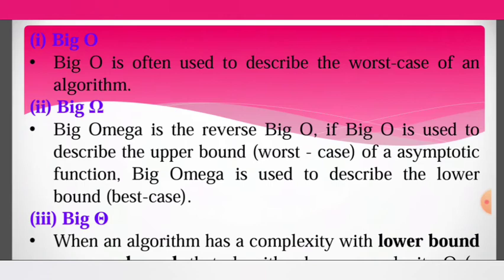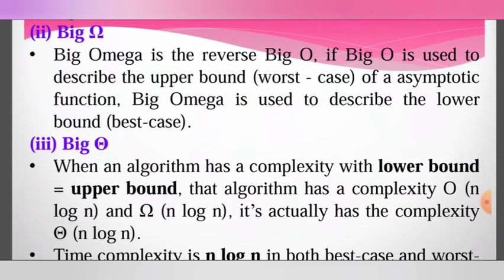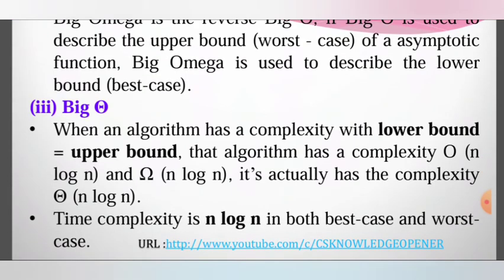Big O notation represents the worst case — it is the upper bound. Big Omega represents the best case — it is the lower bound. Big Theta is used when the upper bound and lower bound are equal, meaning the algorithm has the same complexity in both cases, expressed as Big Theta of n log n for example.